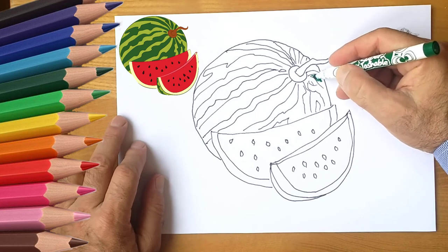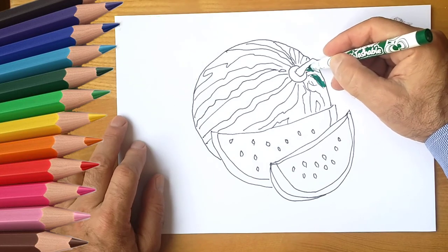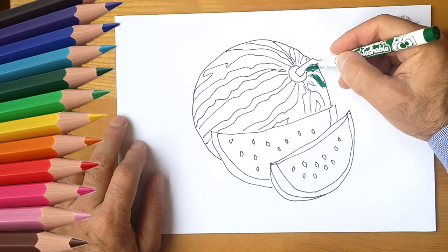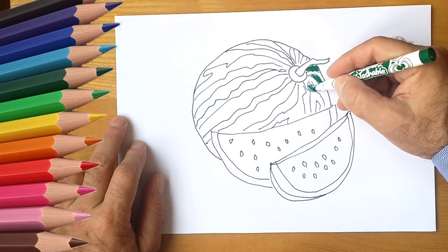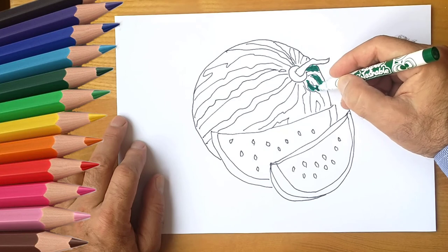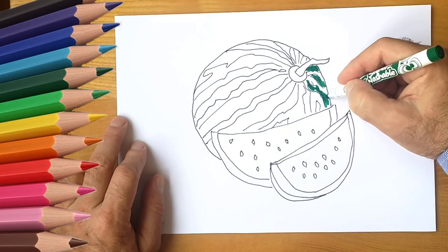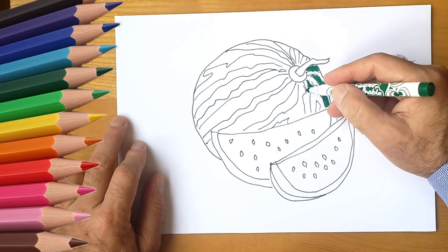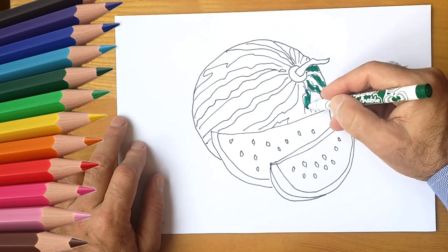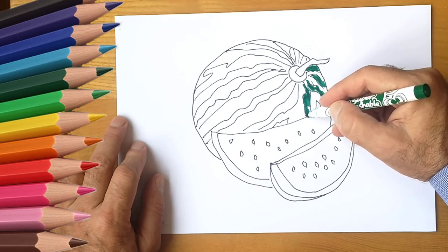Now draw our watermelon and both slices. To do this, use different paints. Many will be green, and of course red and pink will also be here. Draw watermelon seeds in black. We invite you again and again. We will draw a lot of interesting things.